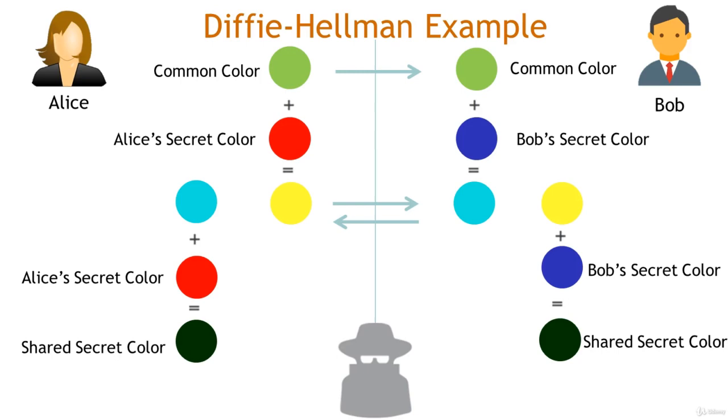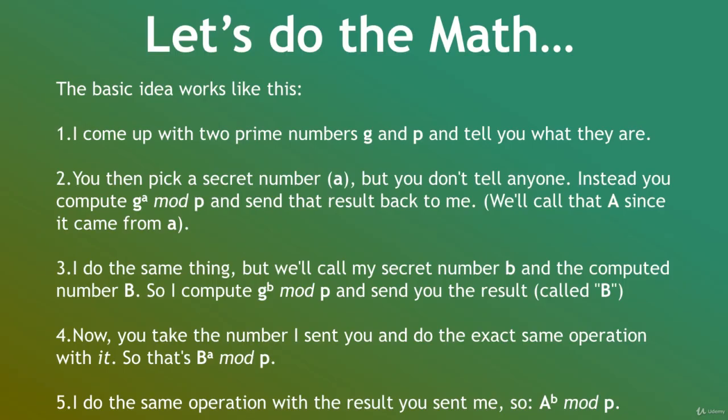Diffie-Hellman is a way of generating a shared secret between two people in such a way that the secret can't be seen by observing the communication. That's an important distinction. You're not sharing information during the key exchange. You're creating a key together. This is particularly useful because you can use this technique to create an encryption key with someone and then start encrypting your traffic with that key. And even if the traffic is recorded and later analyzed, there's absolutely no way to figure out what the key was, even though the exchanges that created it may have been visible.